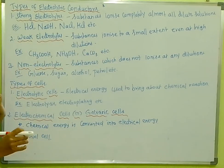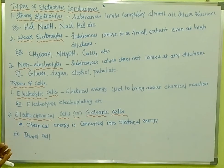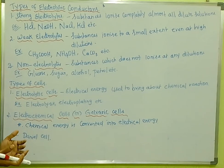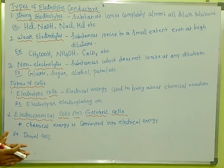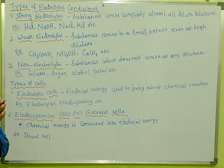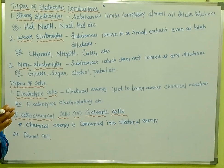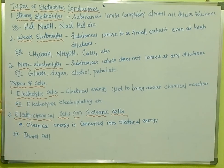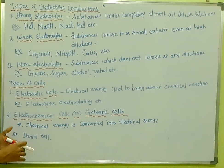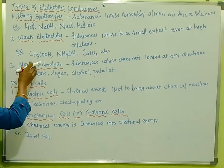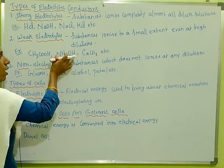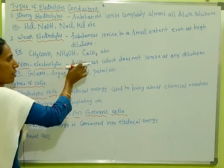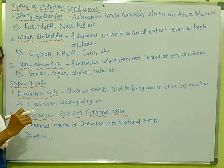A weak electrolyte is a substance that is ionized to a small extent even at high dilute solutions. For example: acetic acid, ammonium hydroxide, calcium carbonate — these are all weak electrolytes.